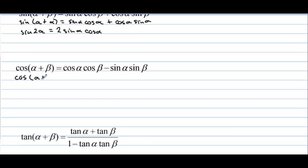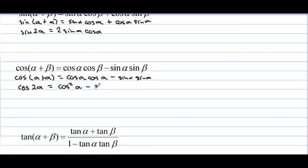Now let's do the same thing with cosine. The angle addition formula gives cosine cosine minus sine sine. For cosine of alpha plus alpha — cosine of twice an angle — we get cosine alpha times cosine alpha, minus sine alpha times sine alpha.